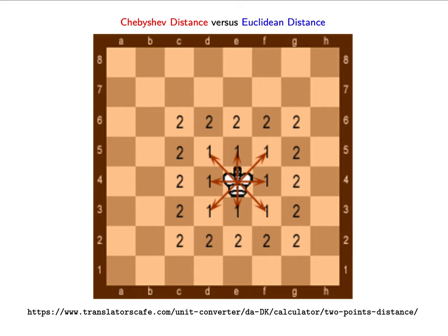When p equals infinity, we have the Chebyshev distance, also called the chessboard distance. It explains how many moves the chess piece king would need to reach any given square. If the king moves one space, you see the number 1 — those squares are at Chebyshev distance 1. Where you see the number 2, the king must move twice to reach that square. The number displayed is exactly the Chebyshev distance.